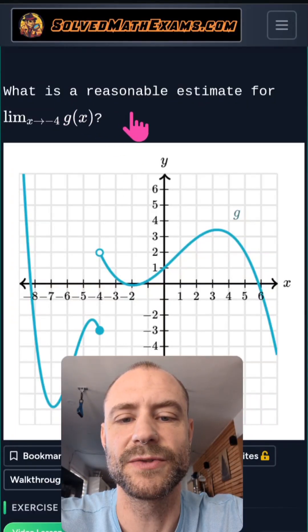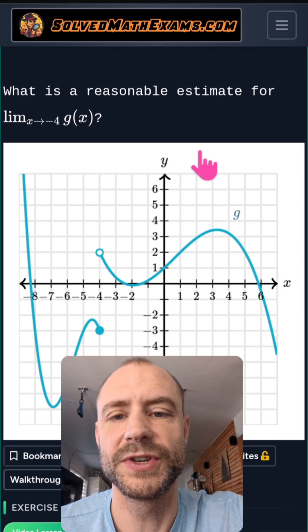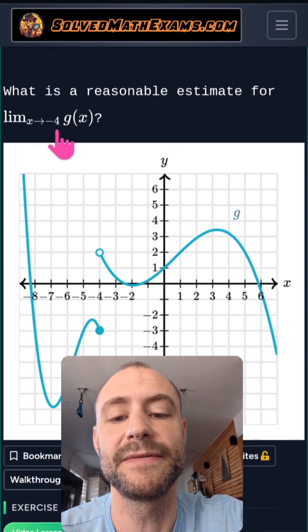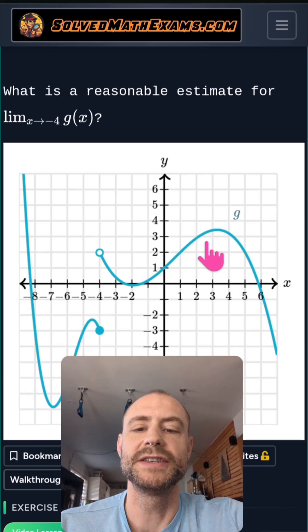Okay, so the challenge is: can you answer this question with only this image? What is a reasonable estimate for the limit as x goes to negative 4 of this blue function g of x?